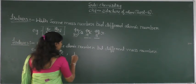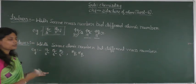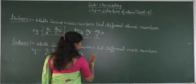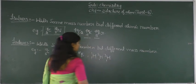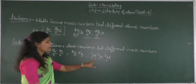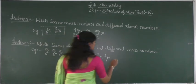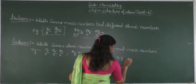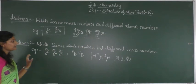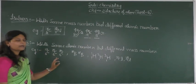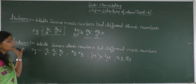Another example: boron-10 and boron-11 — these are isotopes of boron. For hydrogen: hydrogen-1, hydrogen-2, and hydrogen-3 — where hydrogen-2 is deuterium and hydrogen-3 is tritium. Another example is chlorine-35 and chlorine-37, which are isotopes of chlorine. They have the same atomic number but vary in mass number.